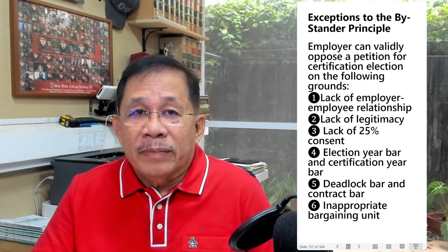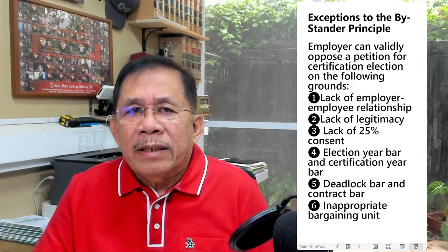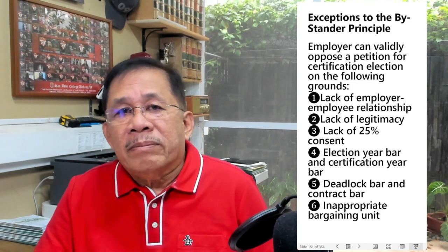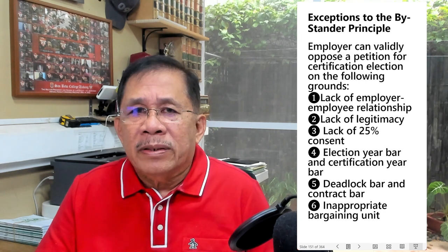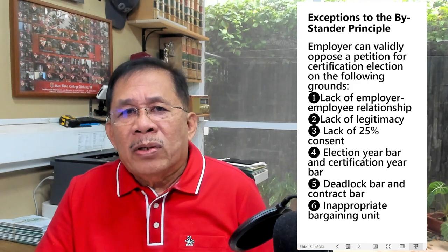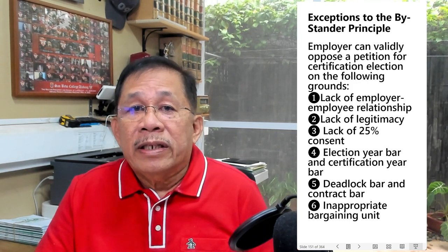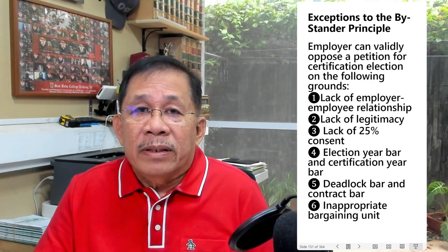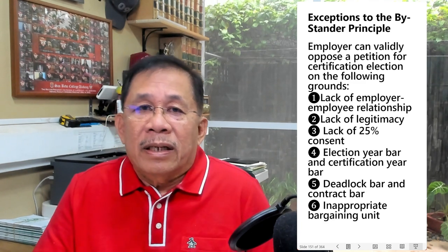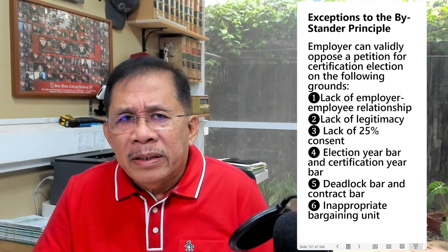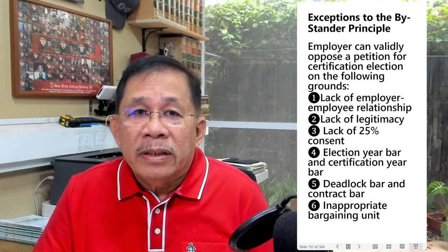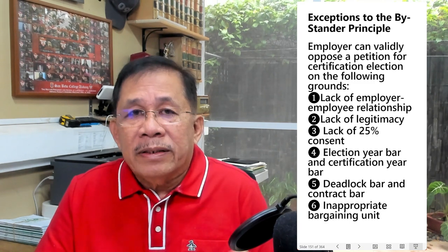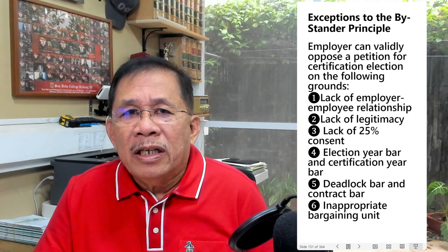The bystander principle admits of certain exceptions. There are exceptional situations where an employer can validly oppose a petition for certification election. First, an employer can validly oppose when the relationship of employer-employee does not exist between the company and the employees sought to be represented by the petitioning union. The duty to bargain arises only between an employer and its employees, so when there is no such duty, it would be pointless to hold a certification election.